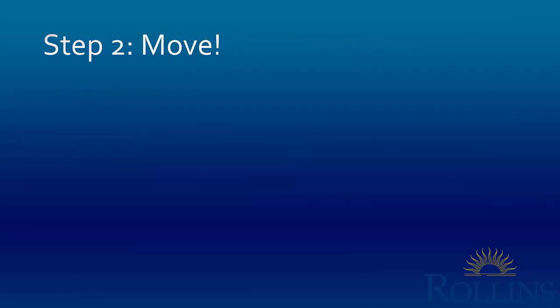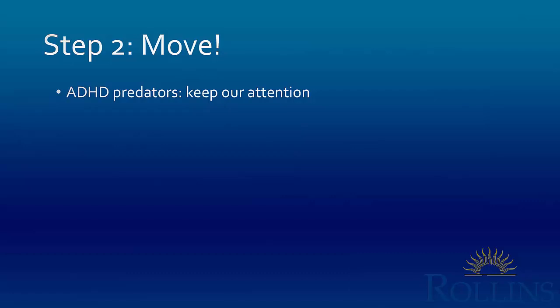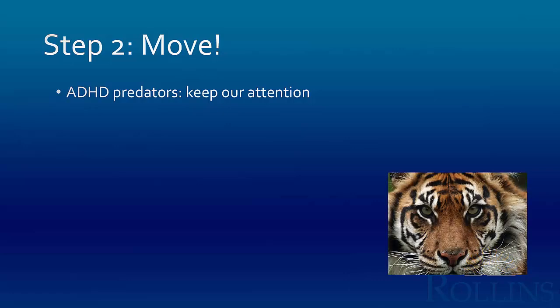The next big step is to move. Human beings are all ADHD predators — our biology makes us predators — so you need to keep our attention the way you would a predator's. Look at an image of a tiger: notice his eyes are in front, just like ours, suggesting interest in depth, speed, and movement. Draw on all those things when trying to keep a predator interested. Notice also how difficult it is to look away from the tiger's eyes — making eye contact creates a bond that lets you capitalize on attention.